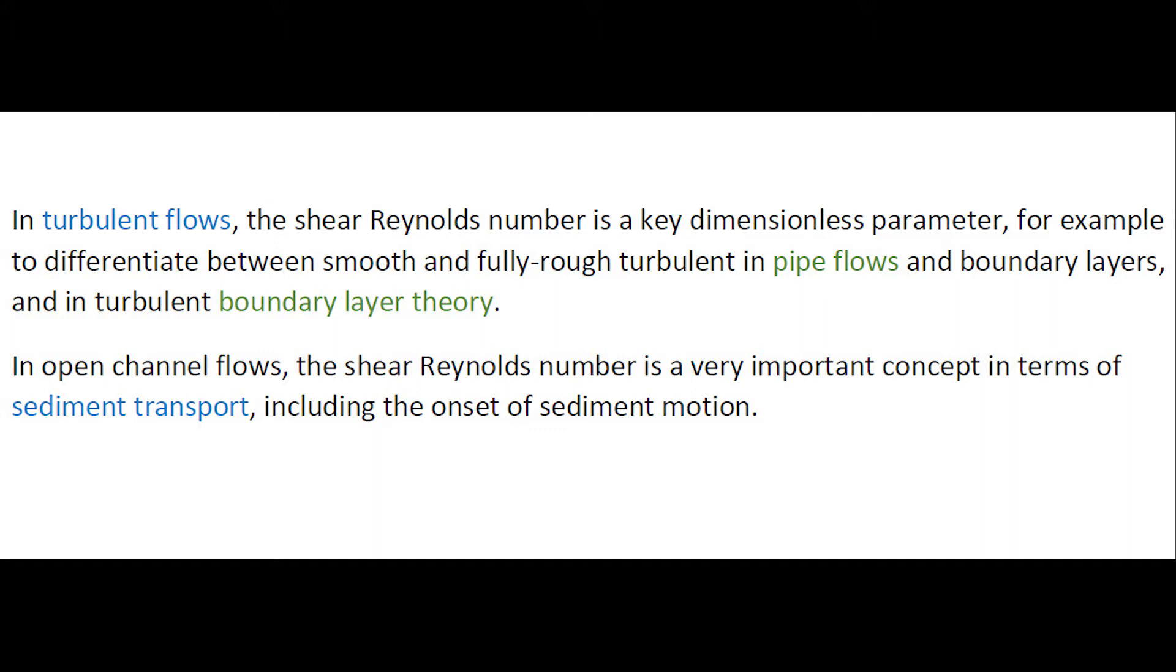In turbulent flow, the shear Reynolds number is a key dimensionless parameter, for example, to differentiate between smooth and fully rough turbulent pipe flow, and in turbulent boundary theory.